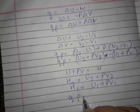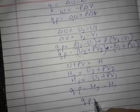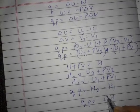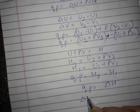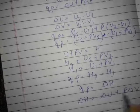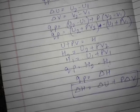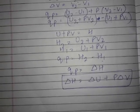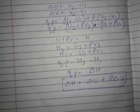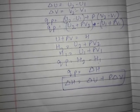Therefore, qP equals H2 minus H1, which is the change in enthalpy, delta H. The heat at constant pressure equals the change in enthalpy. Delta H equals delta U plus P delta V. Enthalpy represents how much energy is absorbed or evolved in any process at constant pressure.